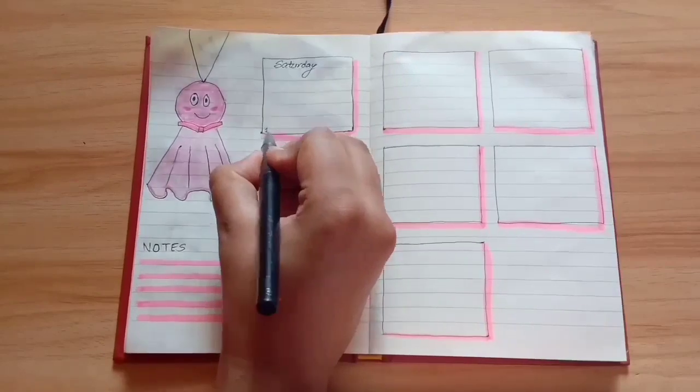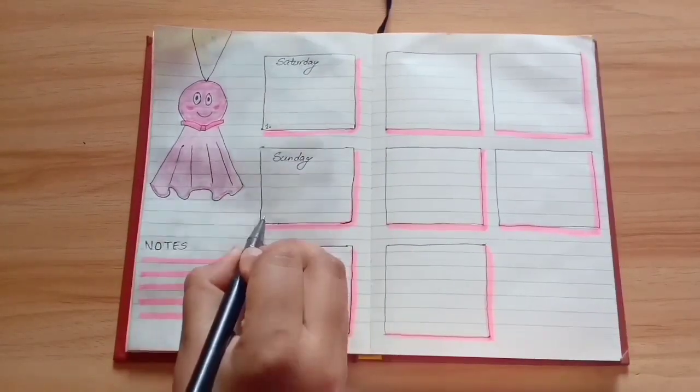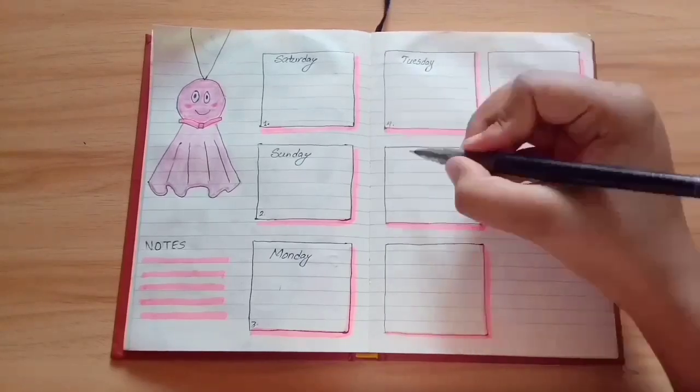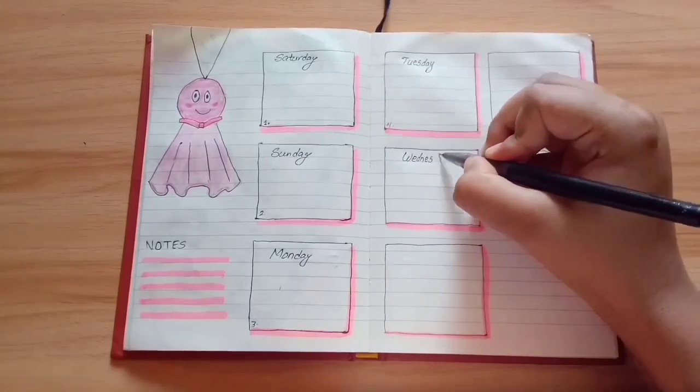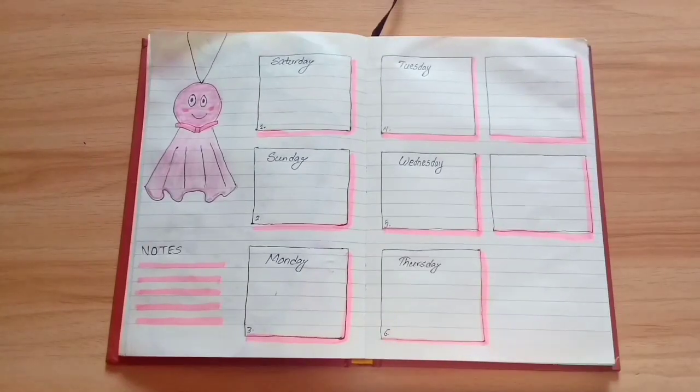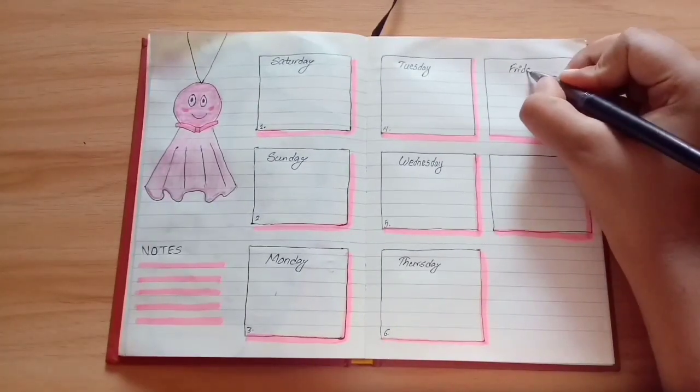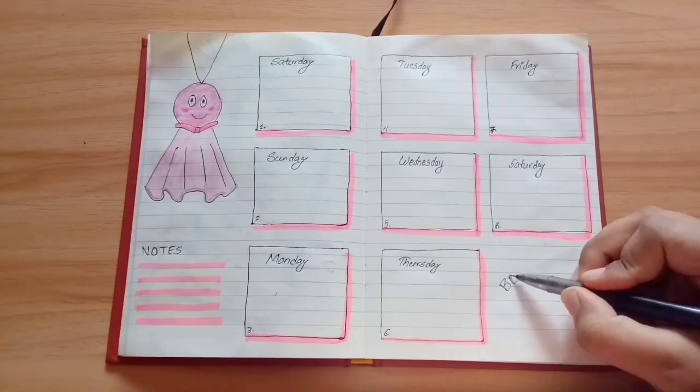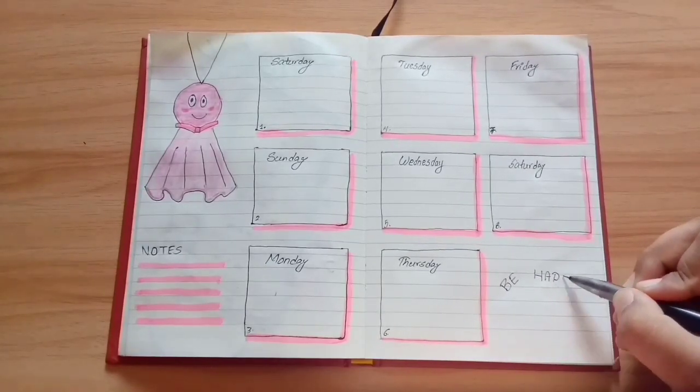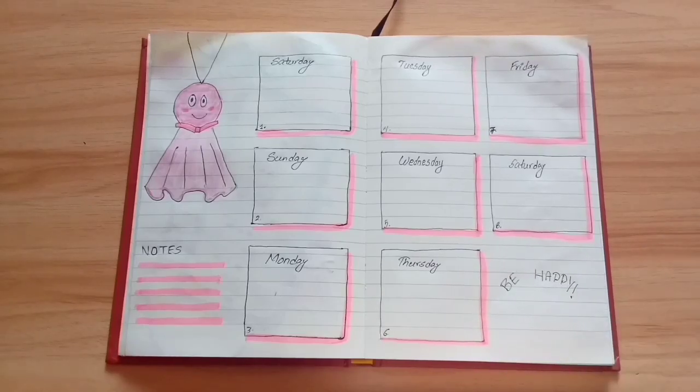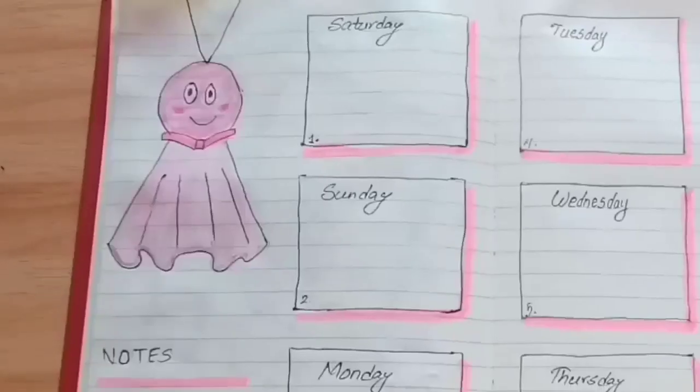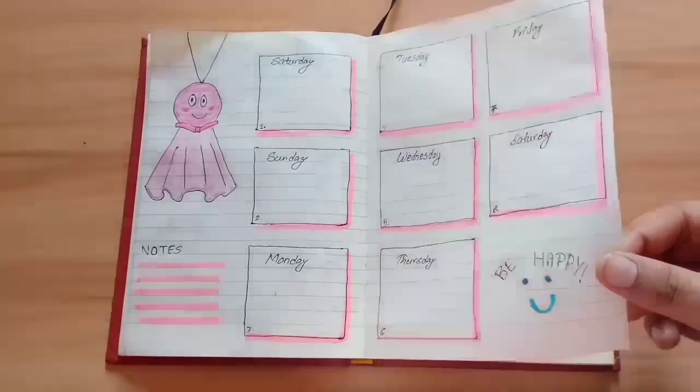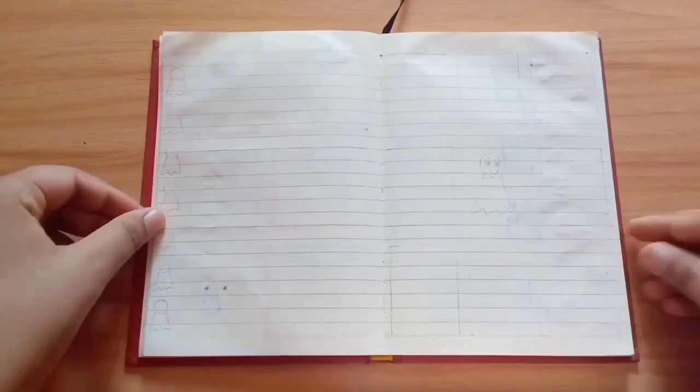Then I wrote down the days and the dates of the week in the small square boxes. To cover up the empty space, I wrote 'be happy' and added a smiley emoji. So this was the first weekly spread which can be prepared under five minutes. Hope you liked it, moving on.